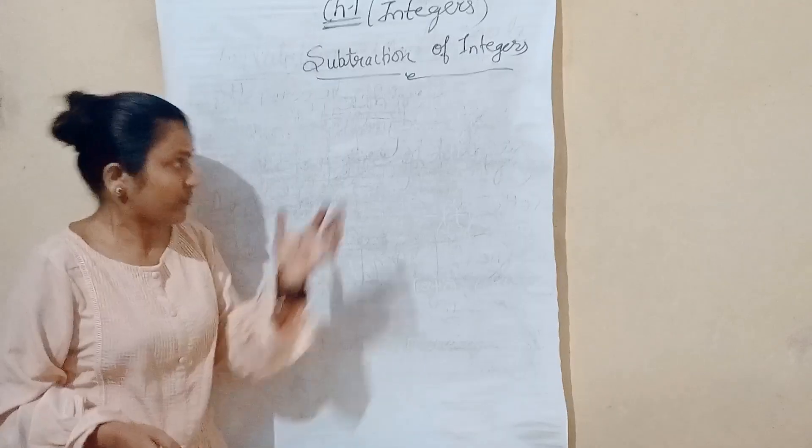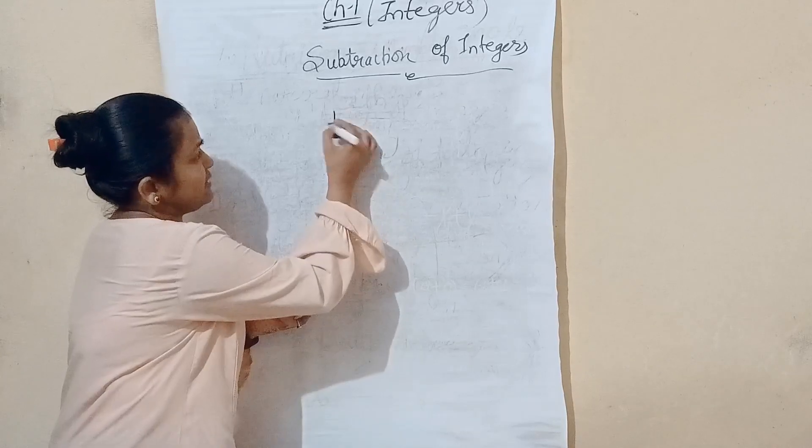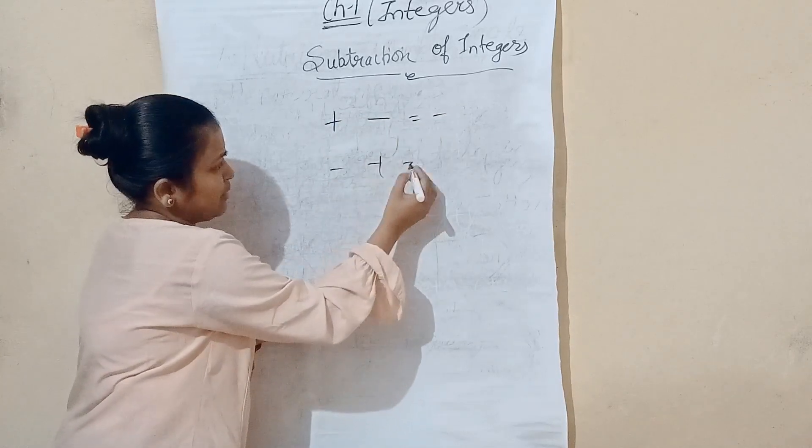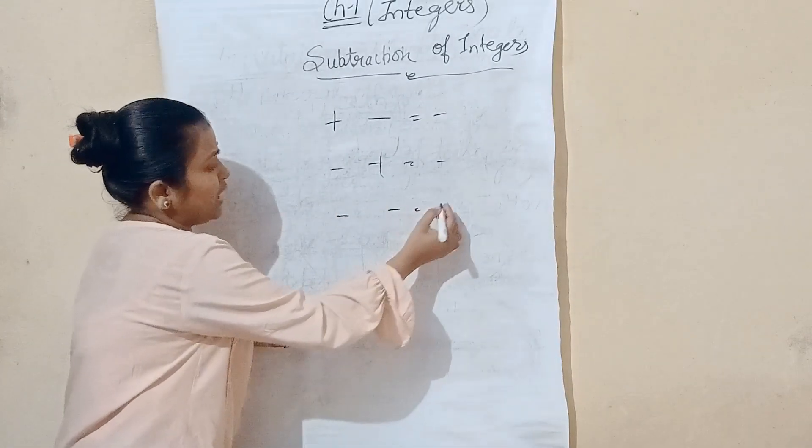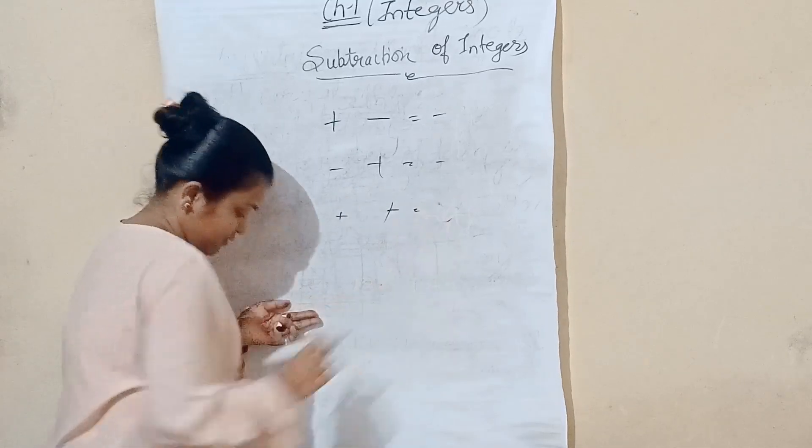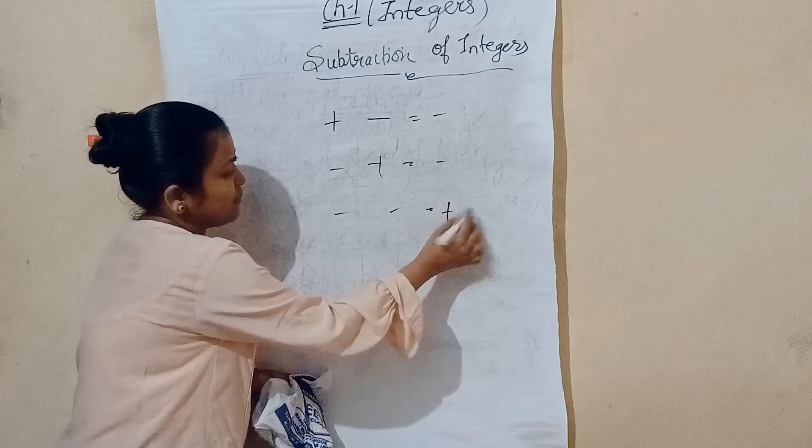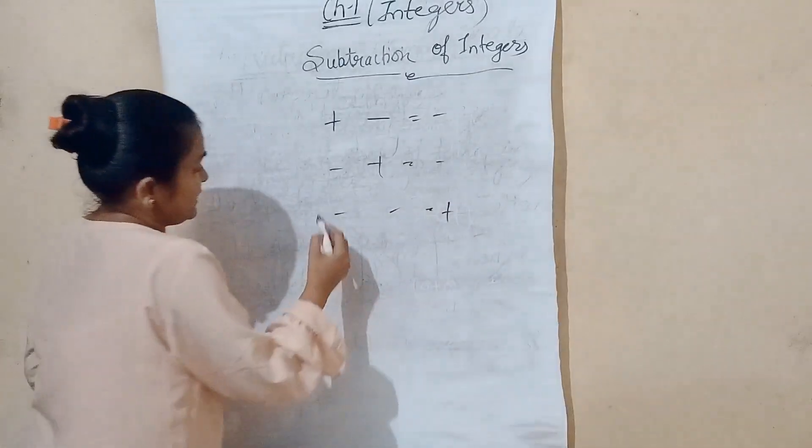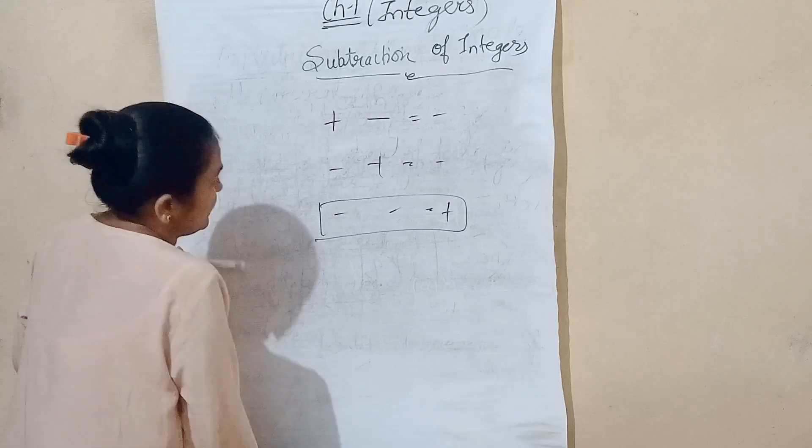Start. Subtraction of integers. I have told you that the subtraction of integers is plus minus. Minus is minus. But if we do minus minus, then we will have plus. So, this is the subtraction of integers.